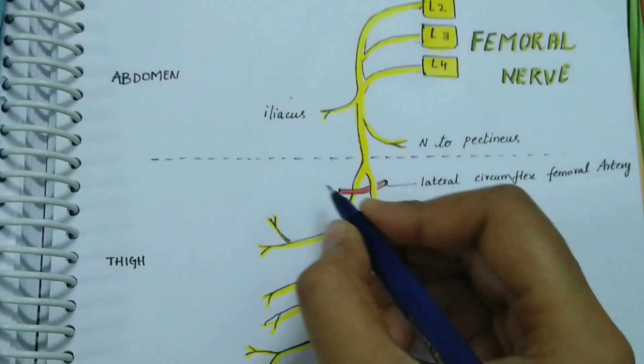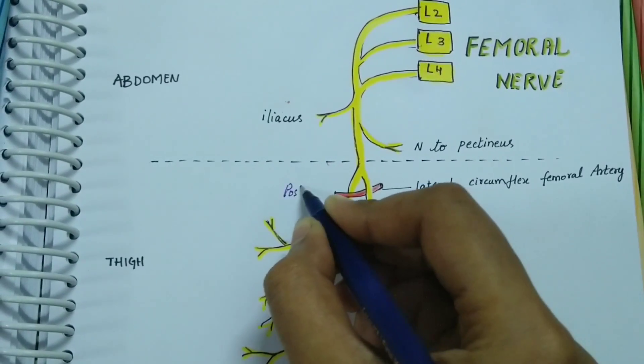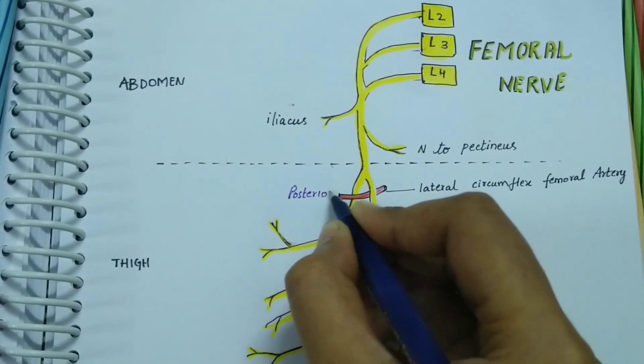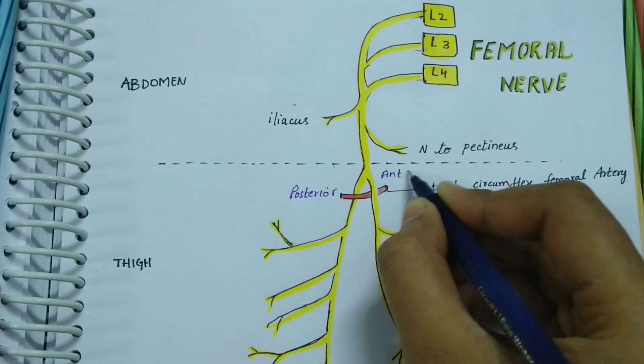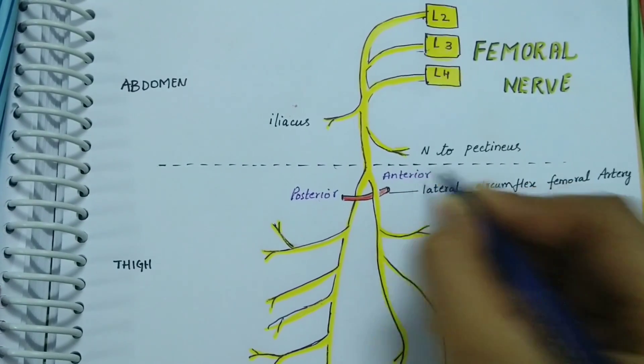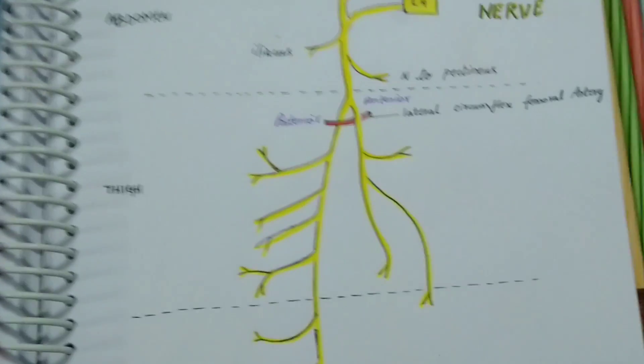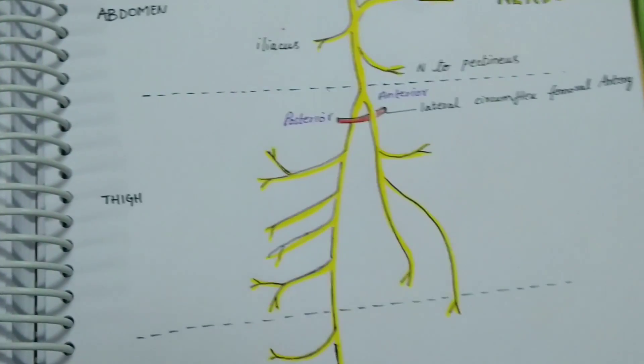This is the posterior division or the main trunk. This is the anterior division.